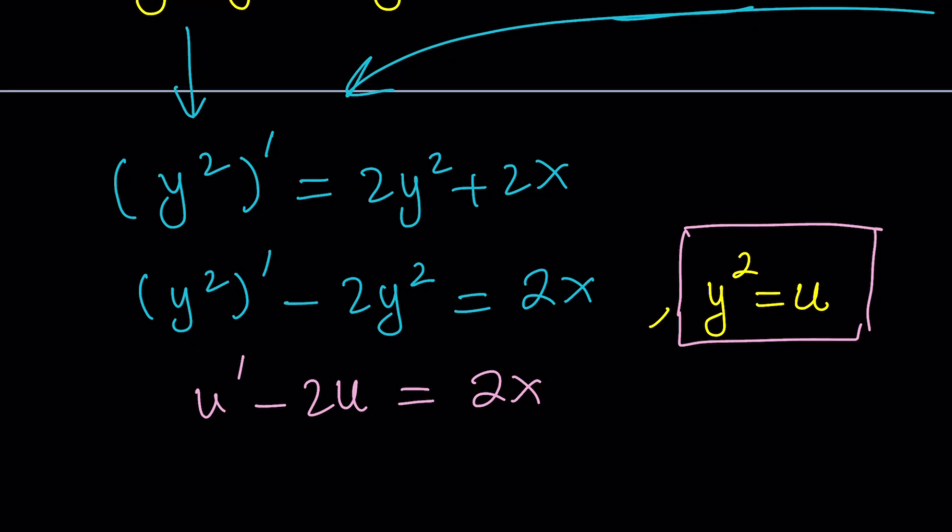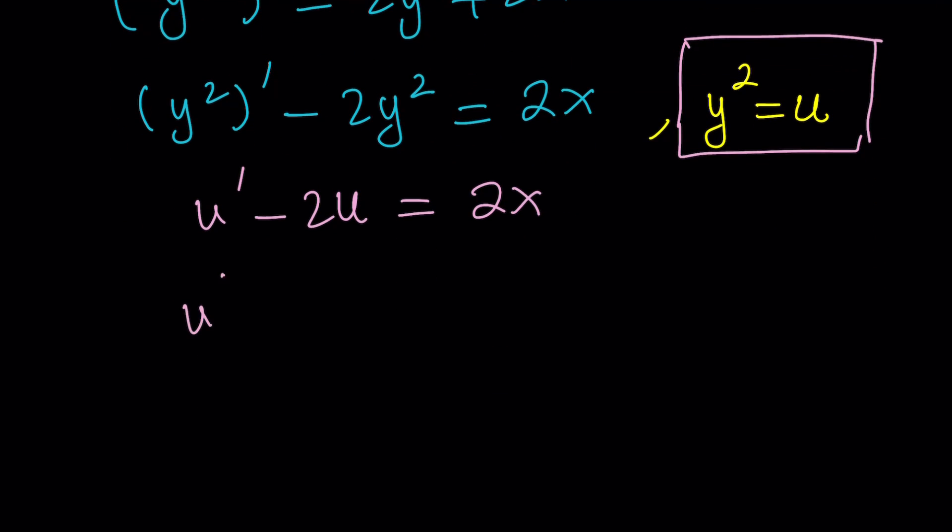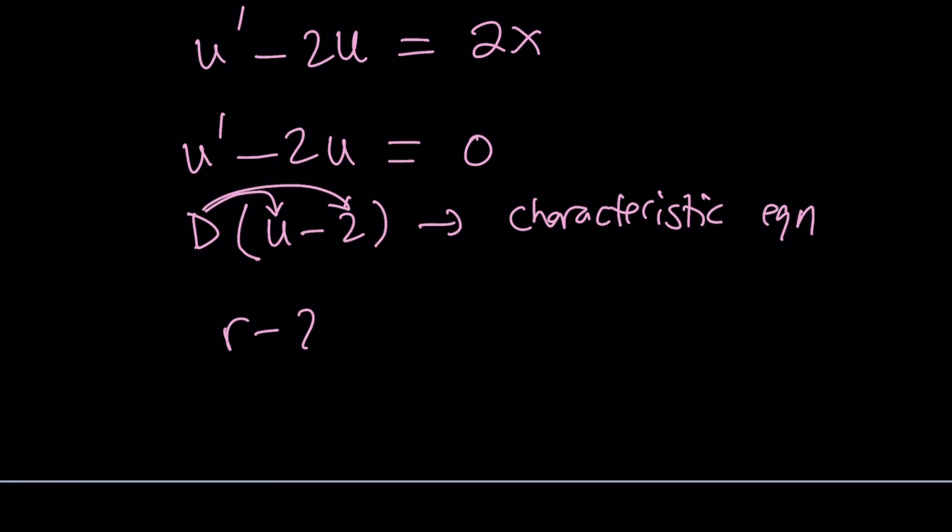How do we solve it? First of all, think about the homogeneous case, which means forget about 2x and just set the right-hand side equal to 0. Because this equation is fairly easy to solve. The derivative and then 2 times the function, their difference is 0. We're going to use the differential operator here, which is the big D. And when it does, it means differentiate this, and it just means 2 is a constant, so it just multiplies by that. Now, we have what is called a characteristic equation for this. Replace the u with r, you get r minus 2 equals 0. From here, you get r equals 2.